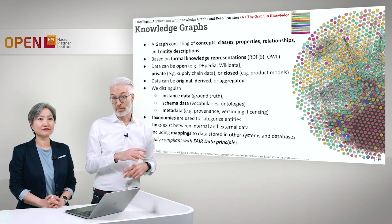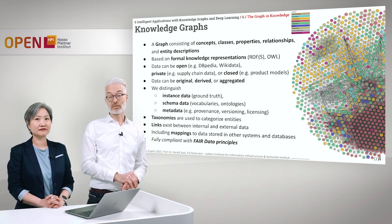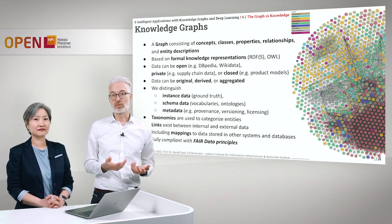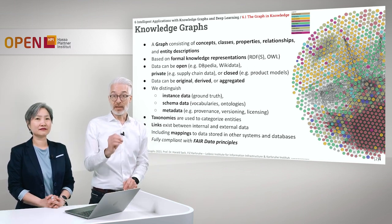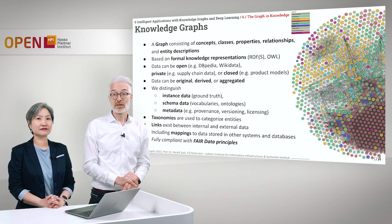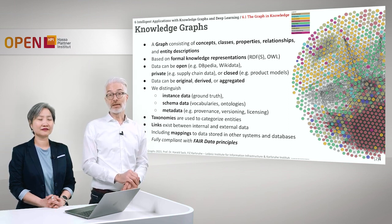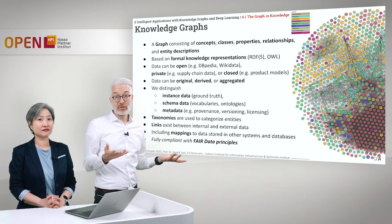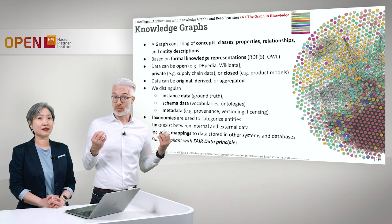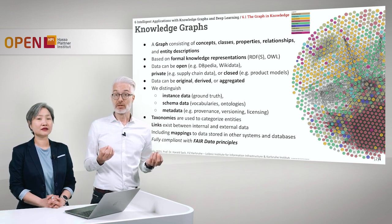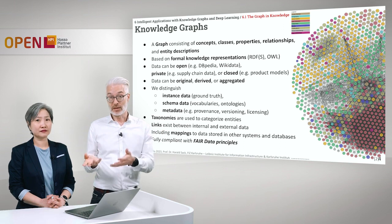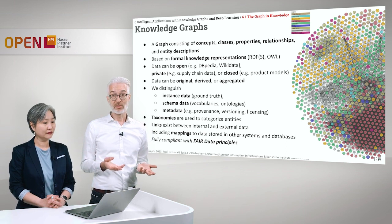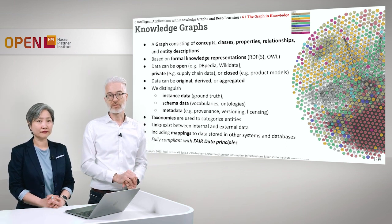There are more flexible definitions of Knowledge Graphs. We can widen it: a graph consisting of concepts, classes, properties, relationships, and entity descriptions. It is based usually on formal knowledge representation languages like RDFS and OWL. The data available in the Knowledge Graph can be at different degrees open or not — completely open for publicly available Knowledge Graphs like DBpedia or Wikidata, or private like supply chain data from a company.